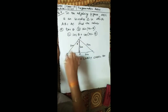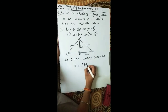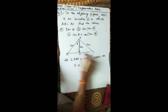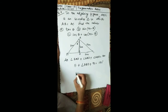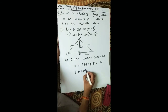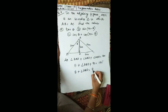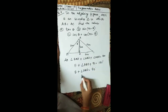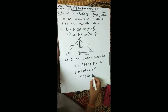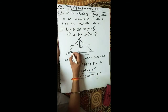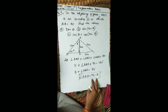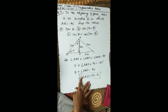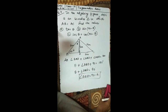Solving: theta plus angle ABD equals 180 minus 90, which is 90. Therefore angle ABD equals 90 minus theta. This is an important part of the solution — please write this derivation in your fair copy.